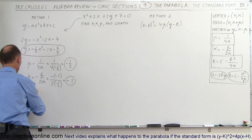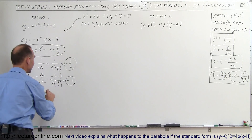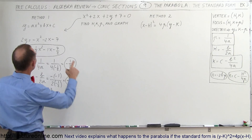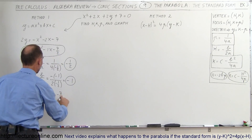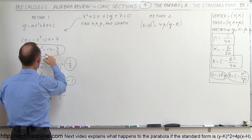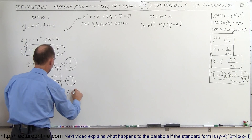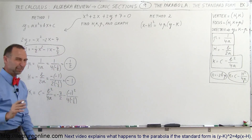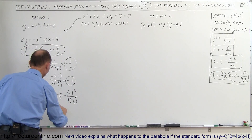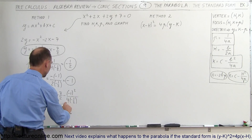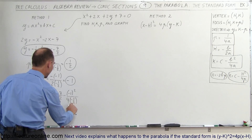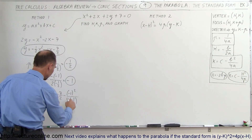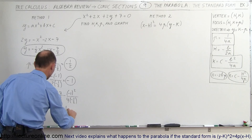Finally we find k using the formula k equals c minus b squared over 4a. So c is negative 7 halves, minus b squared — b is negative 1, so b squared is 1 — divided by 4 times a, which is negative one-half. Simplifying: negative 7 over 2, minus 1 over negative 2. That gives negative 7 over 2 plus 1 half, which equals negative 3. So k equals negative 3.